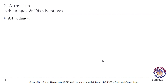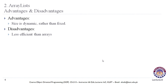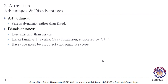Advantages of ArrayList include that the size is dynamic, so we can include elements as needed. Disadvantages include that it can be less efficient than arrays, it lacks the familiar array syntax — which is a limitation of Java, though it can be supported in C++ — and the base type must be an object, not a primitive type.